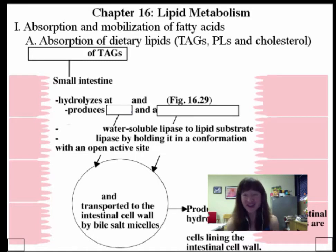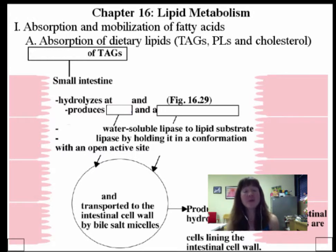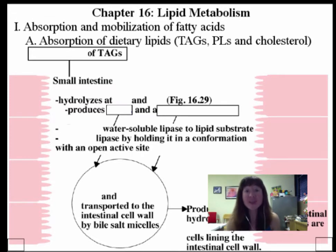I want to encourage you, whether you're studying pre-med or most interested in animal metabolism, to take a botany course, because photosynthesis is the cornerstone process of primary producers. It is the process by which all of us depend upon for our lives, since primary producers produce the sugar molecules we consume. This is paramount to survival and to energy and alternative energy. But the pace of this class is high, so now we jump into the depths of lipid metabolism, beginning with the absorption and mobilization of fatty acids.